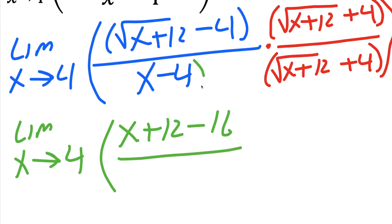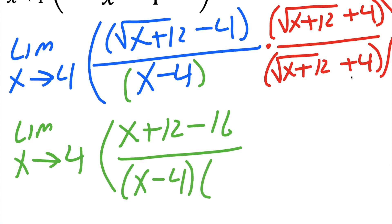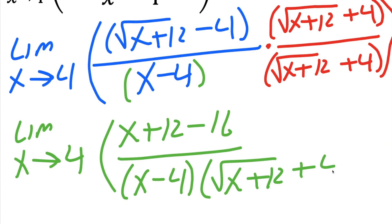I'm going to put parentheses around the denominator. So we're going to get x minus 4 times the square root of x plus 12 plus 4, all in parentheses.